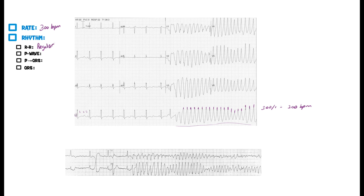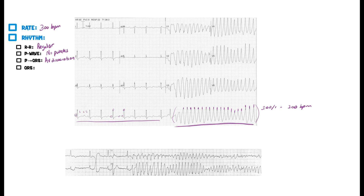The R-to-R interval is definitely the same throughout, so we have a regular rhythm. What about the P-wave? We had a P-wave originally in what seemed like a normal sinus rhythm, but then boom, we go into this really fast rhythm. Focusing on this fast section: do we see any P-waves? Not a chance — there are no P-waves. So no P-waves in this abnormal arrhythmia, meaning there is AV dissociation. The prior normal portion had P-waves leading to QRS complexes, but not here.